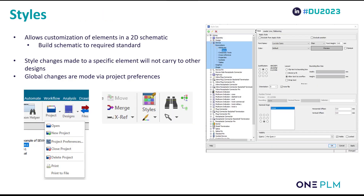Like in the mechanical world, styles can also be used in Solid Edge Wire and Harness Design to control the way our schematic looks. This helps us build designs to reflect our company standards and can be accessed in the Home tab. If I select a single element and go into Styles, everything that can be adjusted is shown related to that element. For this element in particular, I'm able to adjust the font, font color, annotation style, balloon style, text behavior, and the color of the component.